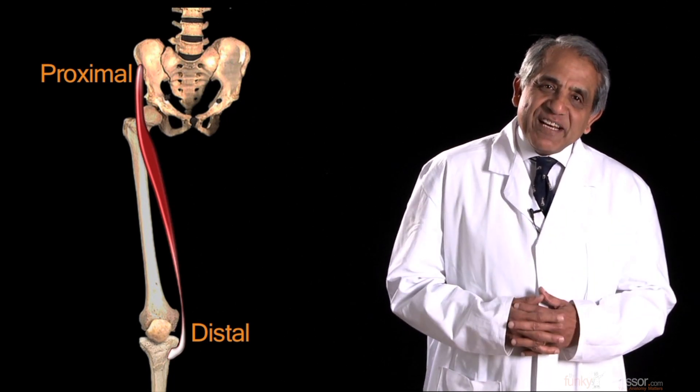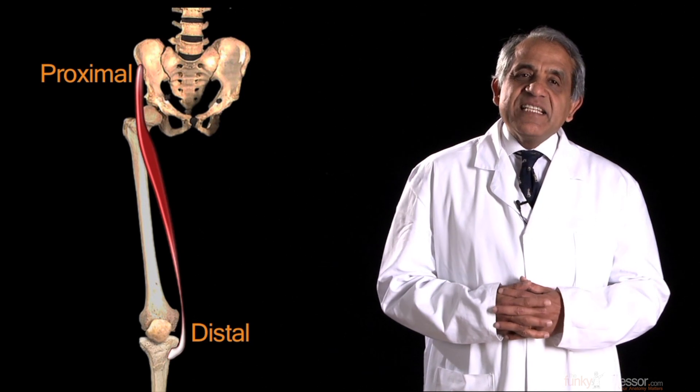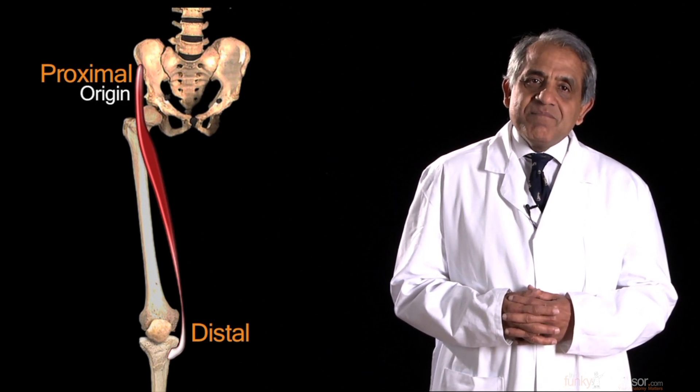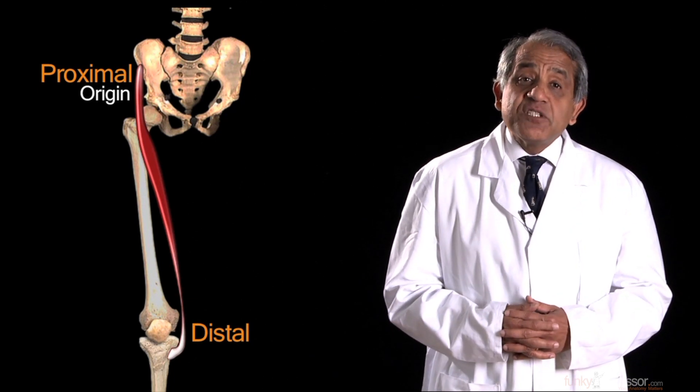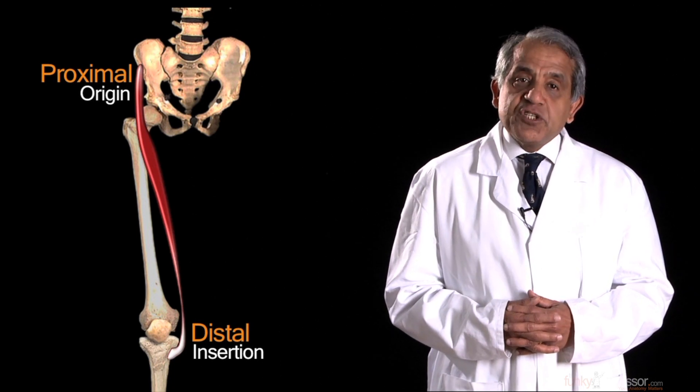By long-standing convention, and generally speaking, the proximal end of the muscle is referred to as its origin. So the proximal attachment is referred to as its origin, and the distal attachment of the muscle is referred to as its insertion.